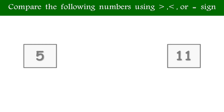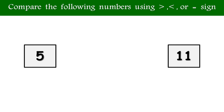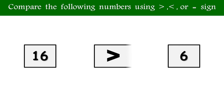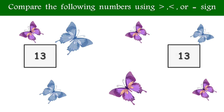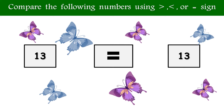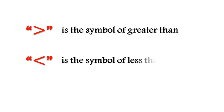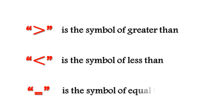Compare the following numbers. 5 is less than 11. Compare the following numbers: 16 is greater than 6. Compare the following numbers: 13 is equal to 13. It is the symbol of greater than. It is the symbol of less than. It is the symbol of equal to.